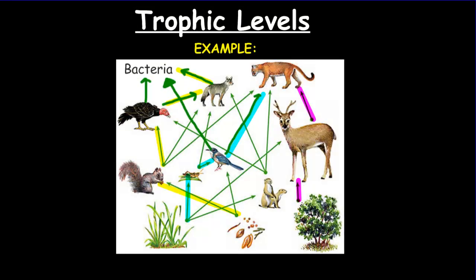On the screen you can see an example of a food web that you might find here in Minnesota. I've highlighted a couple of different pathways through this food web, which are individual food chains within this ecosystem. Now I'd like to use this as an example of how we could label the trophic levels within this ecosystem.